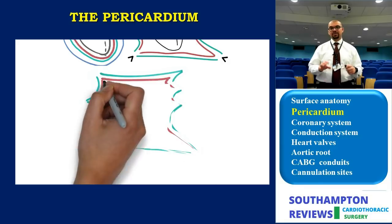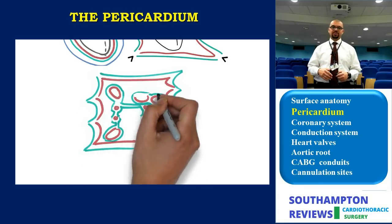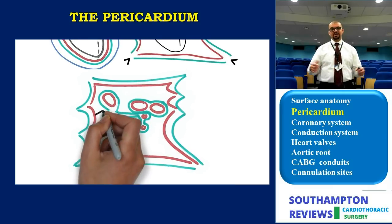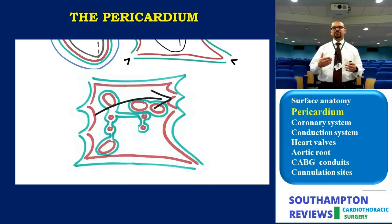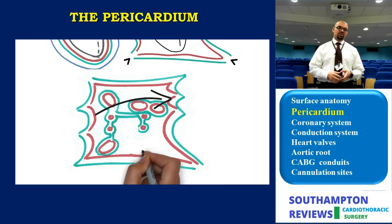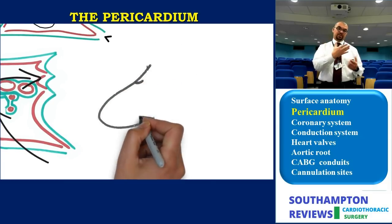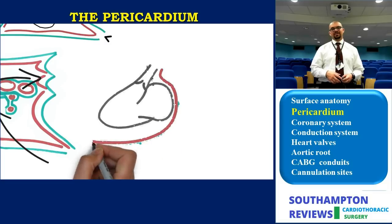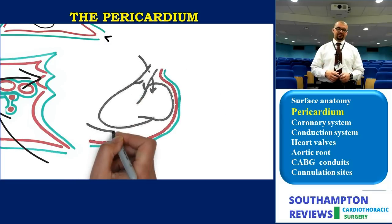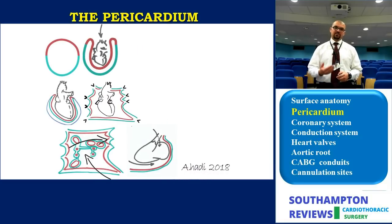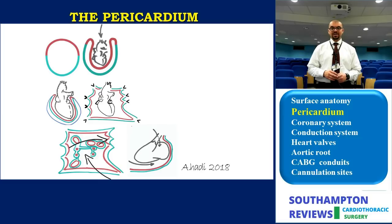Because the heart is not a uniform sphere, it does not push the pericardium equally in all directions, creating what we call recesses or sinuses. The first is the transverse sinus — the transverse space between the arterial and venous ends of the heart tube. In front is the arterial end (the aorta and pulmonary artery); behind is the venous end (the atria and the caval vessels). The oblique sinus is the space traveling from the apex upwards, ending at the reflection of the pulmonary veins.